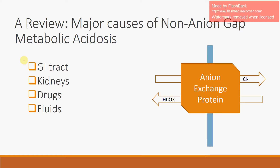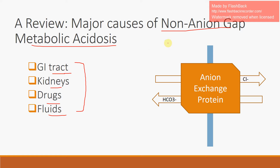These are the four major subgroup causes of a NAGMA: GI tract problems, kidneys, drugs, and fluids. GI tract — if you're having diarrhea; kidneys — if you have a renal tubular acidosis; drugs such as acetazolamide, carbonic anhydrase inhibitors; and fluids — if you're receiving excess NaCl. All of these, by the mechanisms discussed in the previous video, would likely cause a non-anion gap metabolic acidosis, with the primary hallmark being this anion exchange protein which allows for the maintenance of a normal anion gap despite there being low bicarb or a metabolic acidosis.